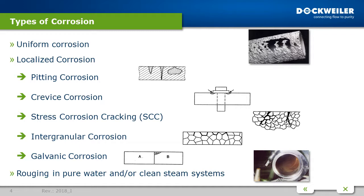Something that also happens very often in stainless steel is rouging in pure water or clean steam systems. There are two types: a red-brown layer you can easily wipe away, and a black one that cannot be removed easily. In most cases you can't see this effect at the location where it is caused — you see it somewhere at the end, at an end cap or a vessel for example. The rouging product is transported through the whole system, so the reason for it — not the incorrect part — could be anywhere in the system.